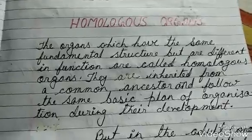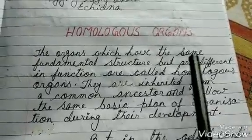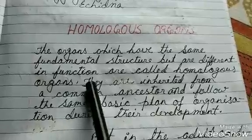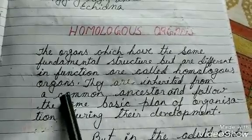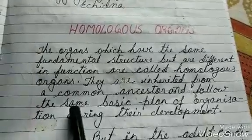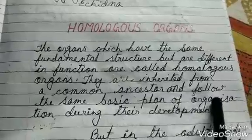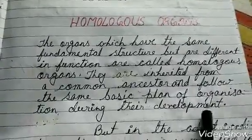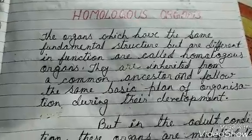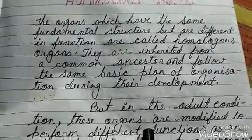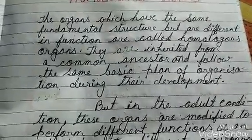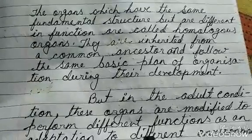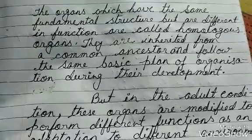The organs which have the same fundamental structure but are different in functions are called homologous organs. They are inherited from a common ancestor and follow the same basic plan of organization during their development, but in the adult condition these organs are modified to perform different functions as an adaptation to different environments.